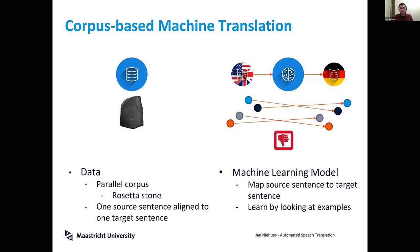We need really huge amounts of data — nowadays we're speaking about millions of sentences on which these systems are trained. That is really essential: we need large amounts of good-quality data. A typical source for such data is, for example, the proceedings from the European Parliament.